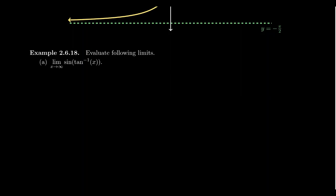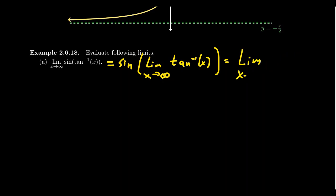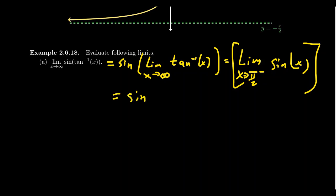Consider the limit as x approaches infinity of sine of arctangent of x. Because sine is a continuous function, you can bring it outside of the limit calculation, so we get sine of the limit of arctangent of x as x approaches infinity. As x approaches infinity, arctangent approaches π/2 from below, so this becomes sine of π/2. Since sine is continuous, we just compute sine of π/2, which is 90 degrees, and sine equals one in that situation.